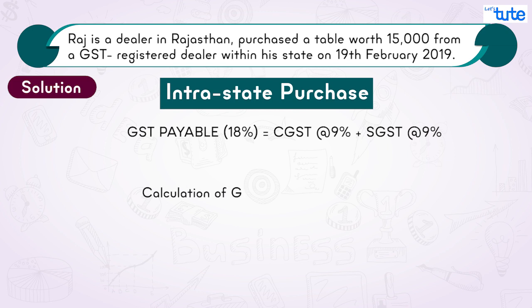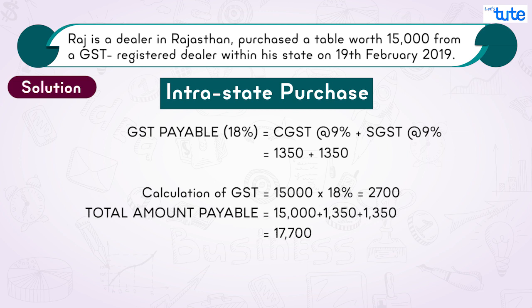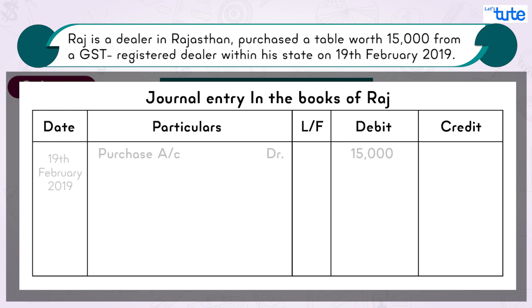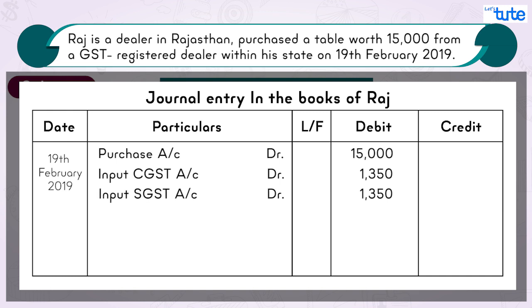GST is calculated on ₹15,000 at 18%, which is ₹2,700. Raj has to pay total tax of ₹2,700 divided into CGST ₹1,350 and SGST ₹1,350, and the total amount payable is ₹17,700. The journal entry is: Purchases Account debit ₹15,000; Input CGST Account debit ₹1,350; Input SGST Account debit ₹1,350; To Creditors or Cash/Bank Account ₹17,700. Don't forget to write the narration.